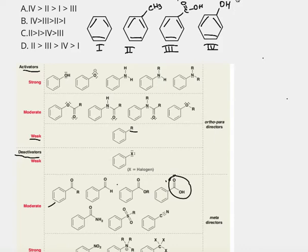And then the last group we will look at is the OH group, and we can find OH here. It is an activating group. It makes the benzene ring more reactive, and it is strongly activating.